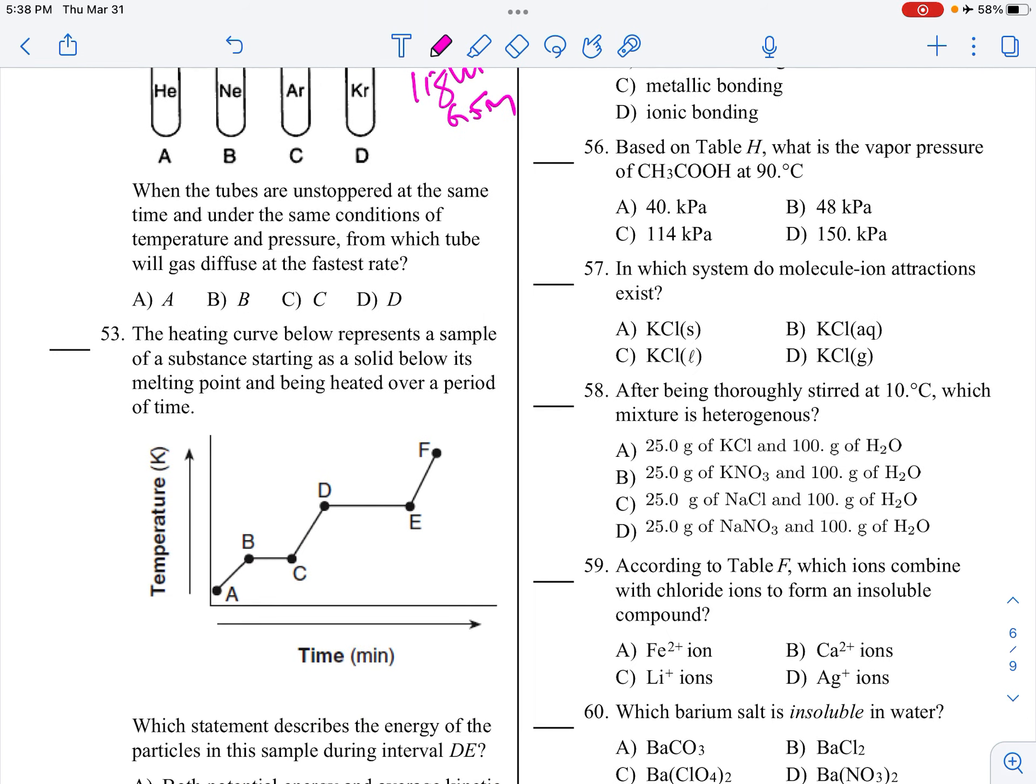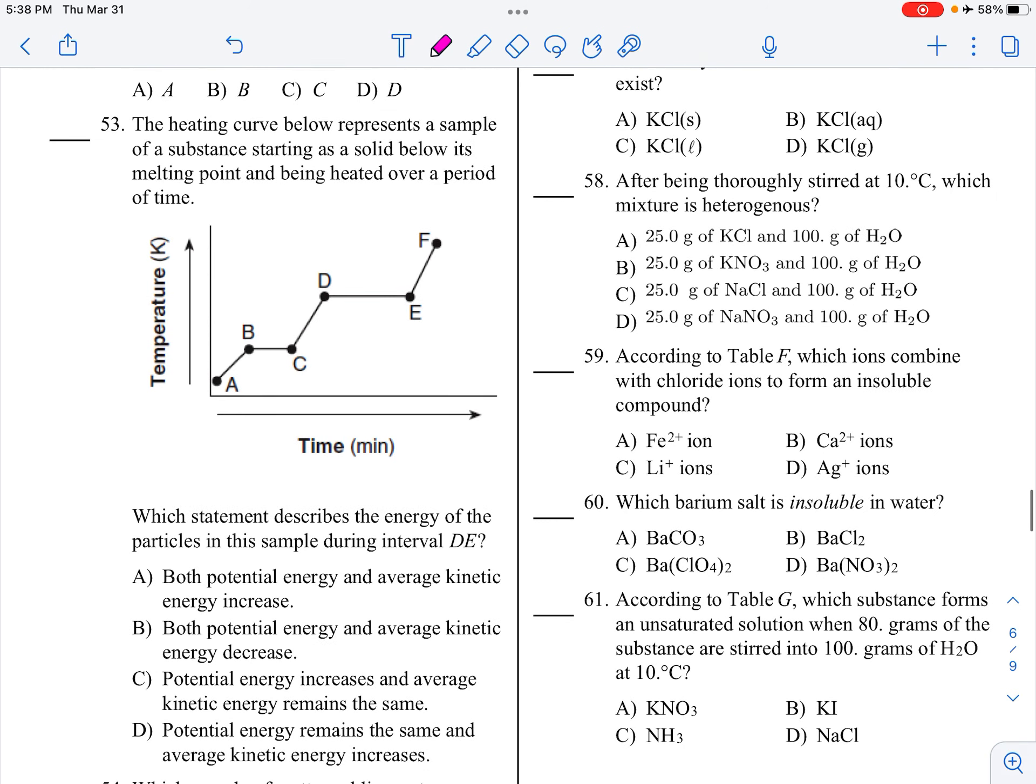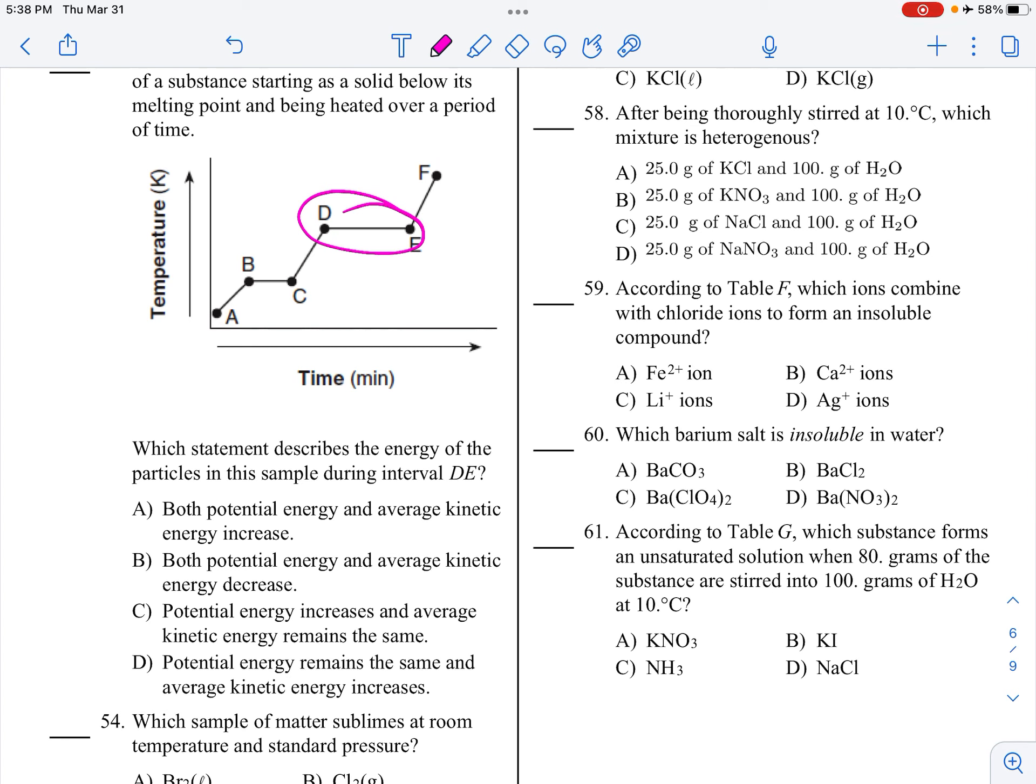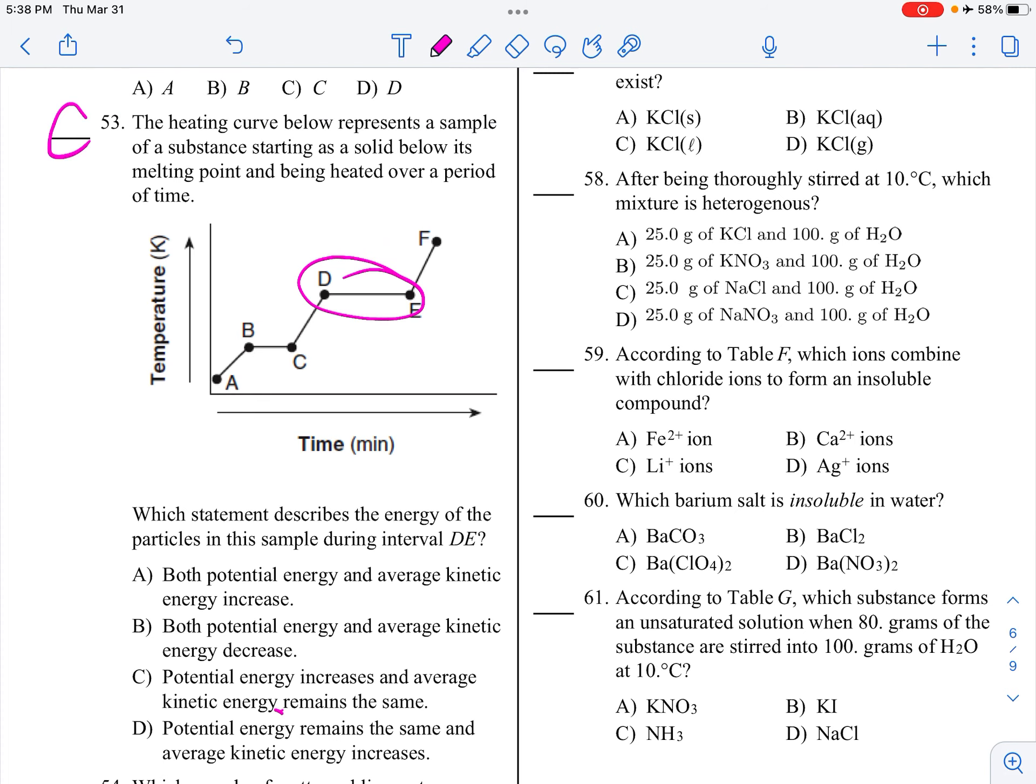The heating curve below represents a sample of a substance starting as a solid below its melting point and being heated over a period of time. What is going on with the energy during D to E? That's a phase change, which means average kinetic energy does not change. You can notice that that line doesn't move. Hold on, I crossed off the right answer. Potential energy increases and average kinetic energy remains the same. 53 is C.